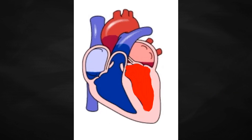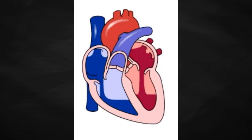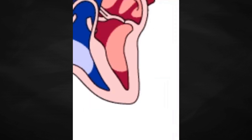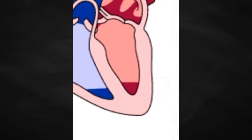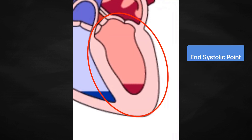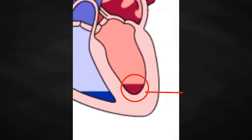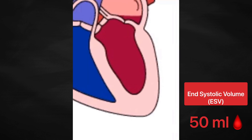Then the left ventricle contracts, forcing blood through the aorta and into the whole arterial system. After that is another moment when the left ventricle is fully contracted. It occurs at the end of contraction or systole, also called the end-systolic point. The volume of blood within the left ventricle at this point is called end-systolic volume and it's about 50 ml.